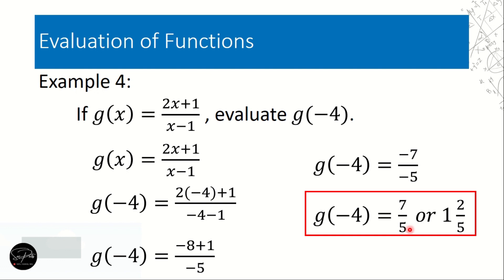So the result is 7 over 5. Expressed as a mixed number, that is 1 and 2/5. So g(-4) = 7/5 or 1 and 2 fifths.